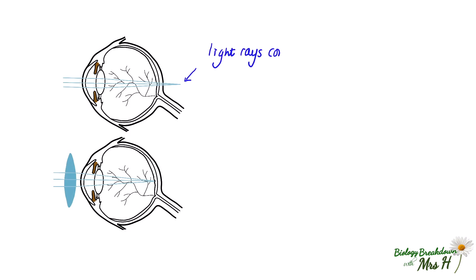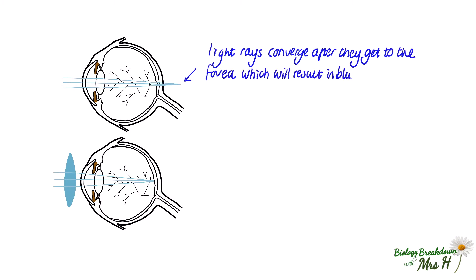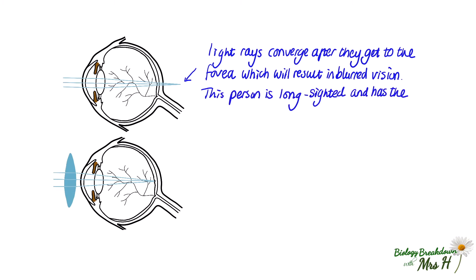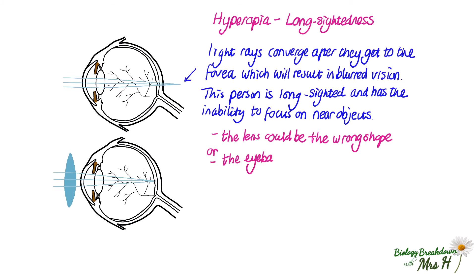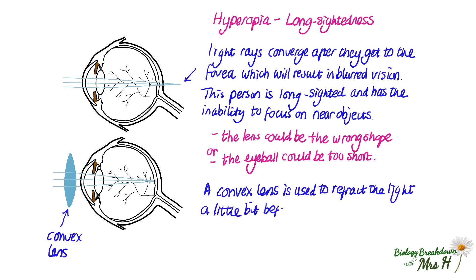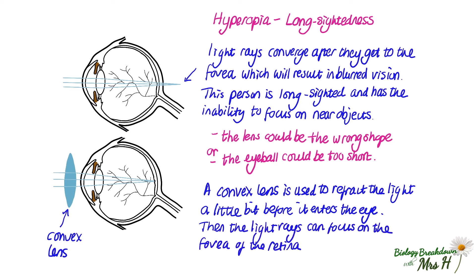You can see here that the light rays converge to a focus after they get to the fovea. This will result in blurred vision, and if this is happening then the person is said to be long-sighted, as they have the inability to focus on near objects. This is known as hyperopia. The cause might be that the lens is the wrong shape or the eyeball is too short. To correct this problem, a convex lens is used so that light is refracted inwards a little bit before it enters the eye, and then the light rays can focus on the fovea of the retina.